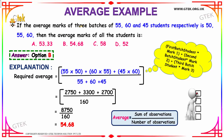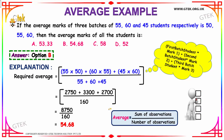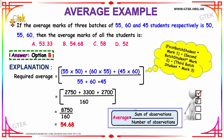It is given that the average marks of three batches of 55, 60, and 45 students are 50, 55, and 60 marks respectively. Using the formula — average equals sum of observations divided by number of observations — the required average is obtained by finding the sum of all students' marks divided by the total number of students. The sum of observations for each batch is average multiplied by number of observations, so for 55 students the average is 50.